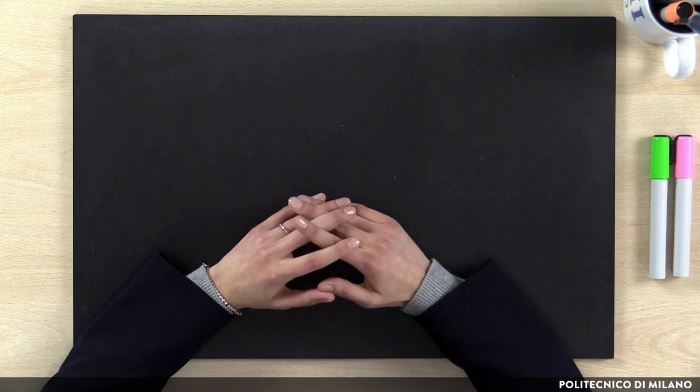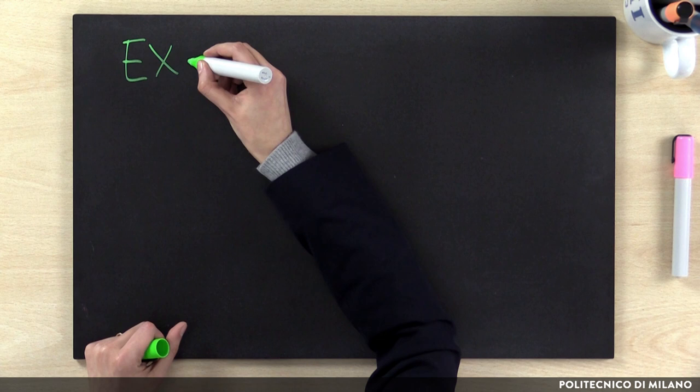We are talking about coordination mechanisms at the micro level because today we are going to investigate the individual perspective. You could also use coordination mechanisms at the macro level, referring to coordination among units.